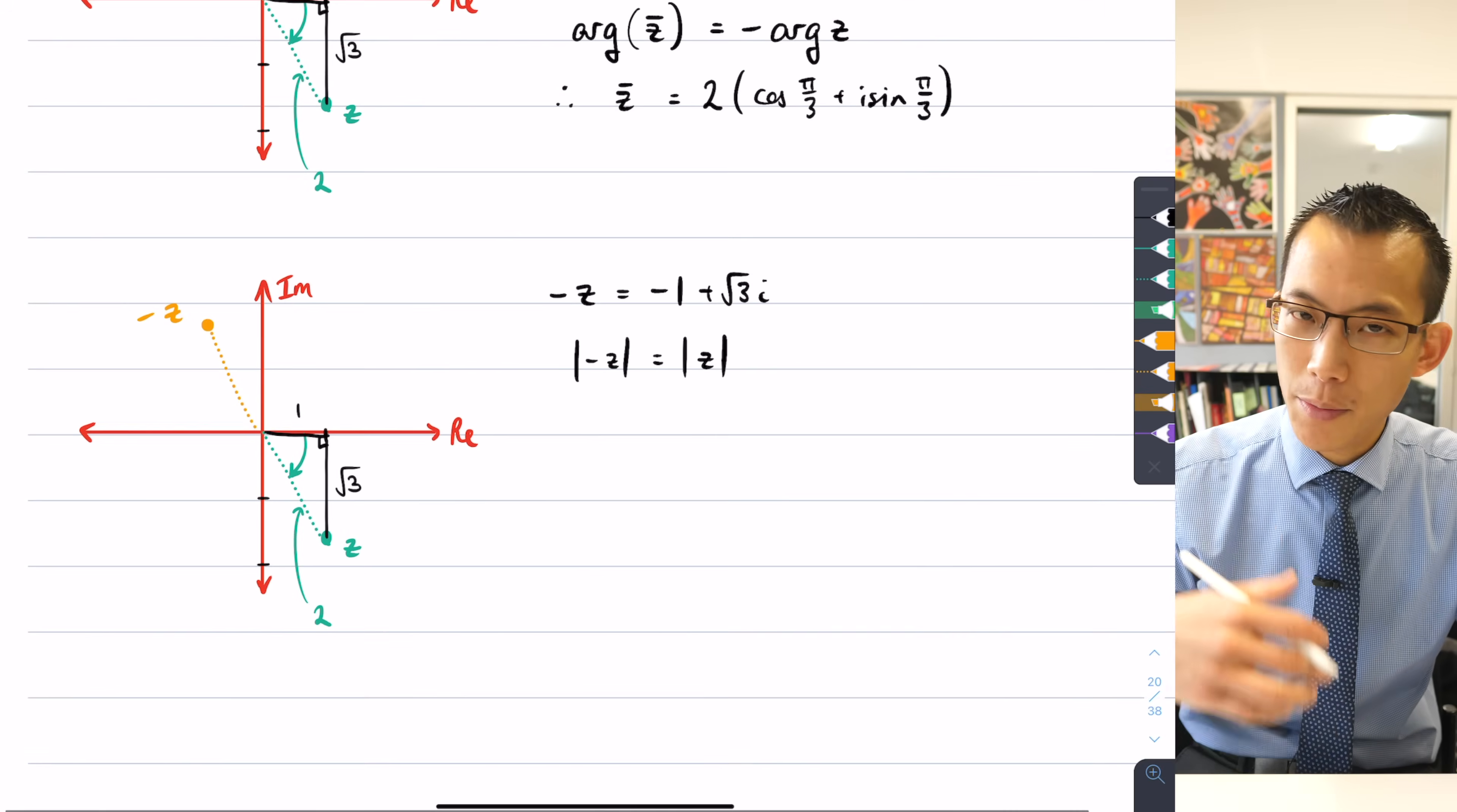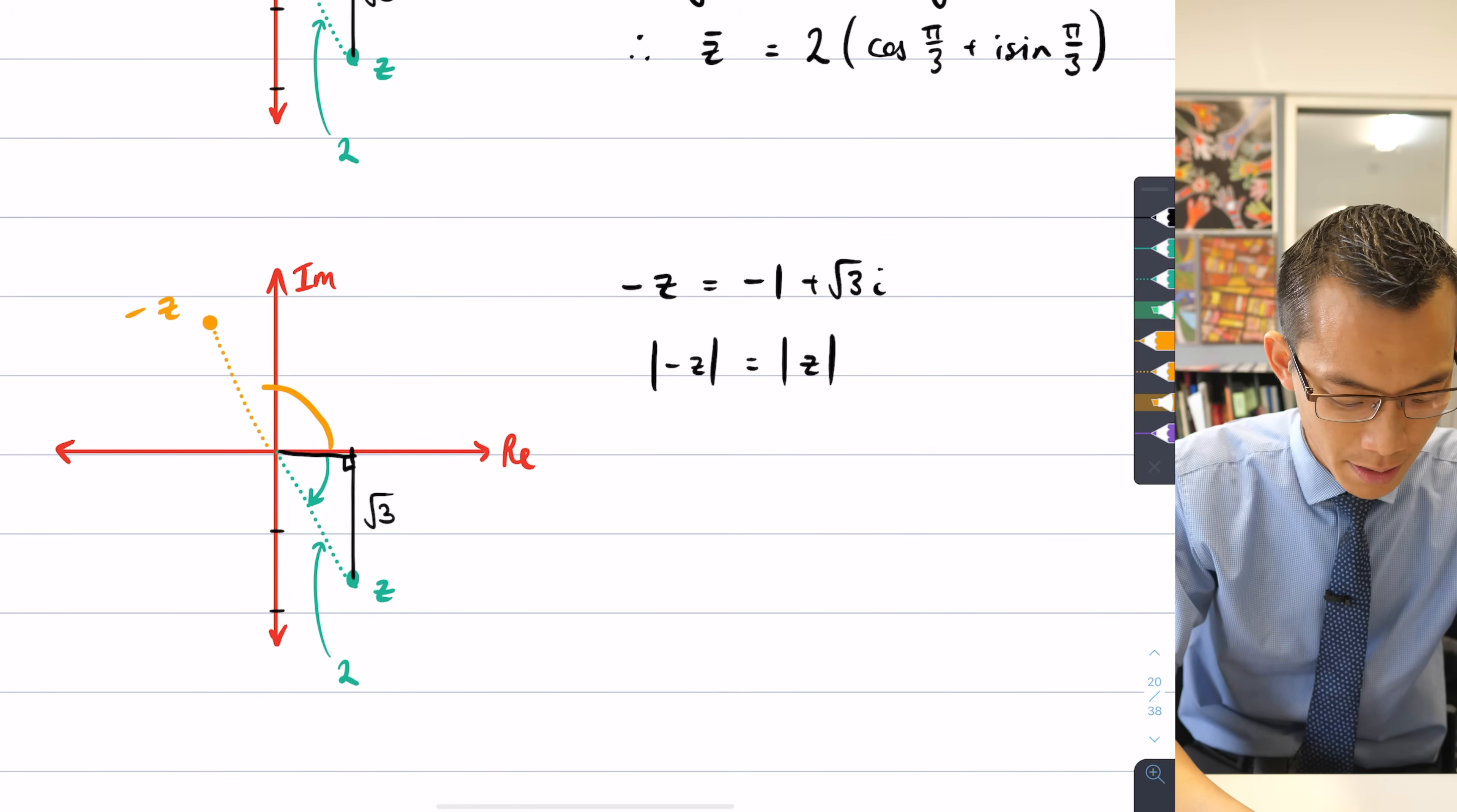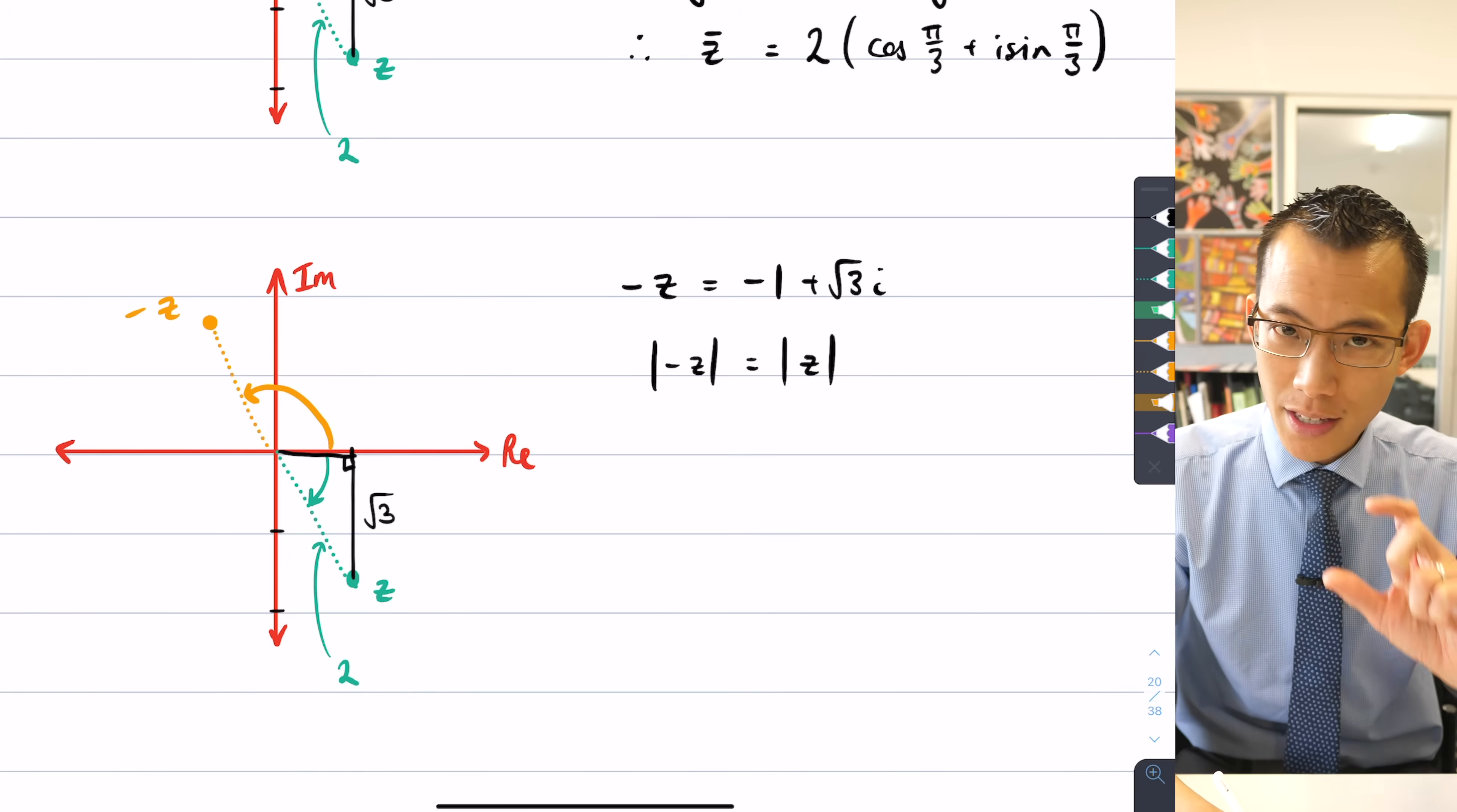Now in this case here, the argument, just like in all the other cases, is going to come from the positive side of the real axis and then rotate anti-clockwise. So it's going to look like this. This is the angle.